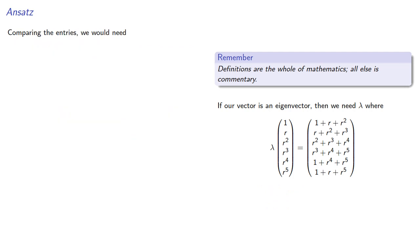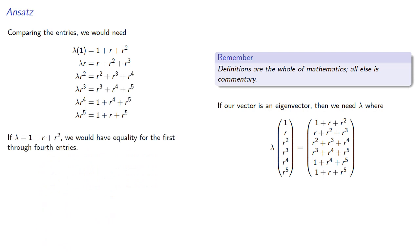Comparing the entries, we would need lambda times 1 to be 1 plus r plus r squared, lambda times r to be r plus r squared plus r cubed, and so on. And if lambda equals 1 plus r plus r squared, we'd actually have equality for the first through fourth entries. But, what about the last two?